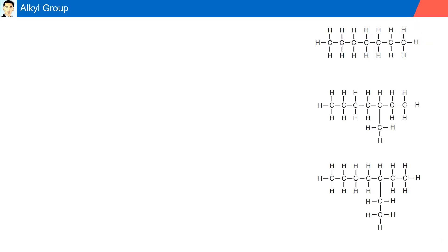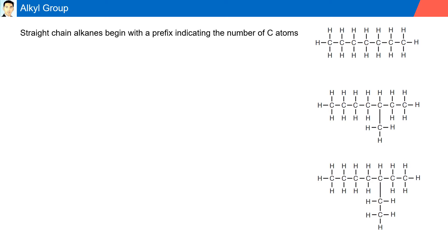Alkyl group. Straight chain alkanes begin with a prefix indicating the number of carbon atoms, and end with the suffix -ANE. The alkane on the right has seven carbon atoms, beginning with hept, and since there is a single bond between the carbon atoms, it's an alkane, therefore the name is heptane.